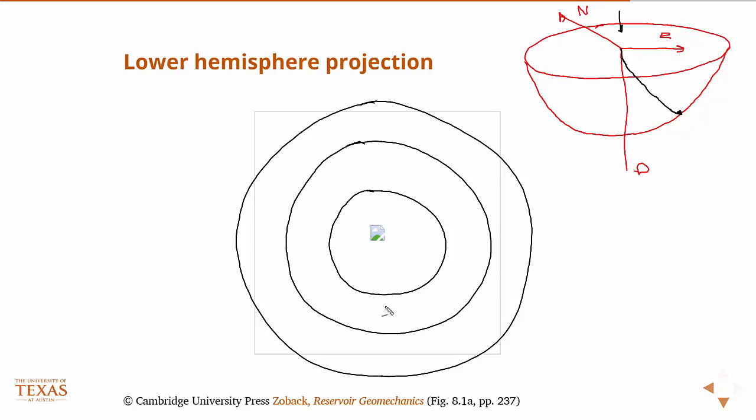And again, this is what the figure would show, where these concentric rings would represent like 30 degrees, 60 degrees, 90 degrees. And so then, this would be north and east.